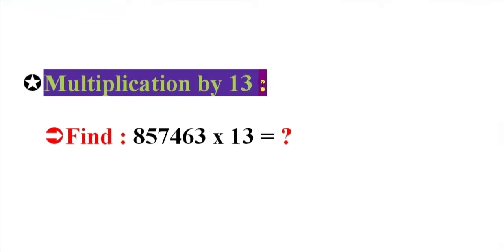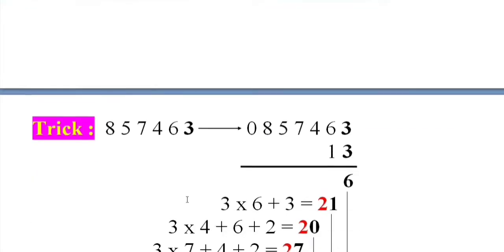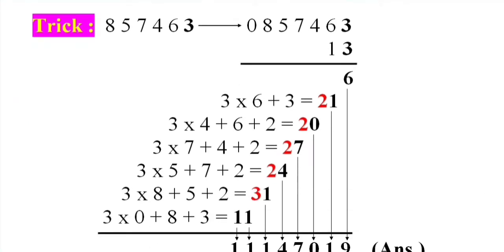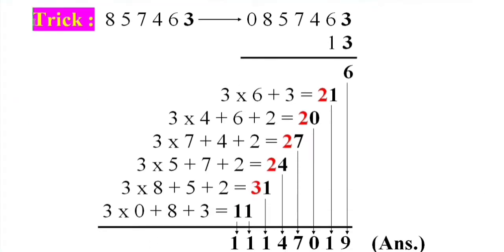Multiplication by 13. Find 857463 into 13 equal what? Trick: Write down 0 besides original number. This is original number into 13. 3 into 3 equals 9. 3 into 6 plus 3 equal 21.